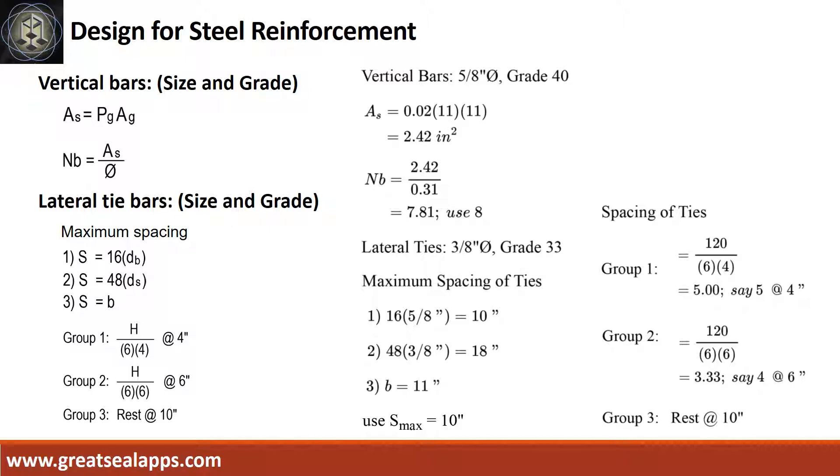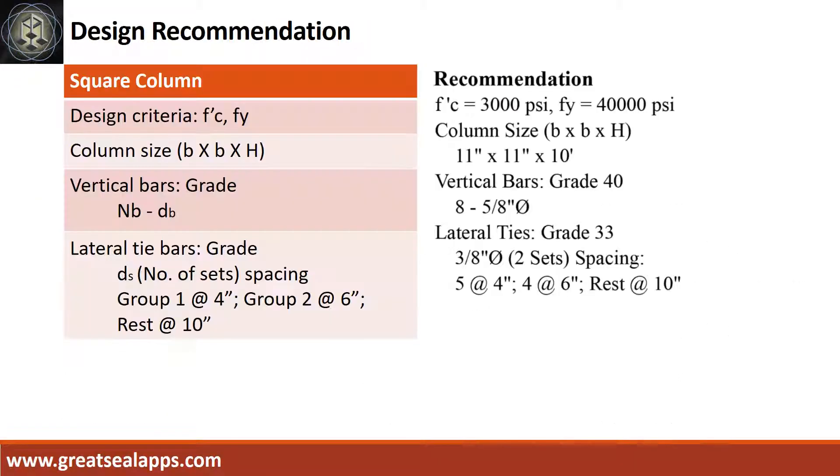Follow the given computations for lateral ties. Design recommendation as follows: f'c equals 3,000 PSI, fy equals 40,000 PSI. Column size is 11 inches by 11 inches by 10 feet.